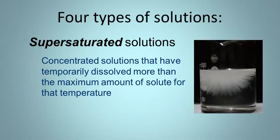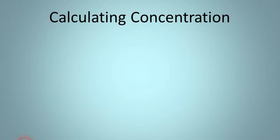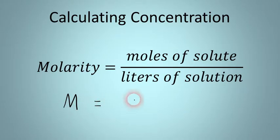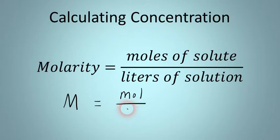When we talk about these vocabulary words — dilute, concentrated, saturated, supersaturated — those are qualitative ways of describing solutions; they're just using words. Well, let's put some numbers to this. We're going to calculate the concentration of a solution using a unit called molarity, abbreviated as capital M. Molarity is equal to the moles of solute divided by the liters of solution. So molarity equals moles divided by liters.